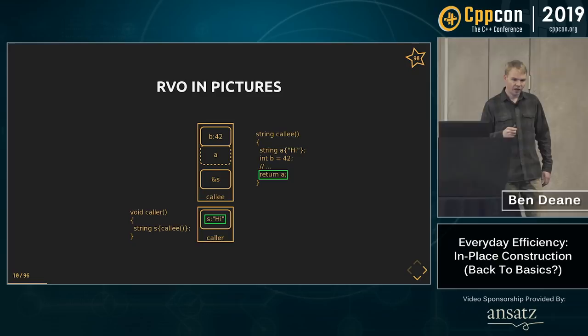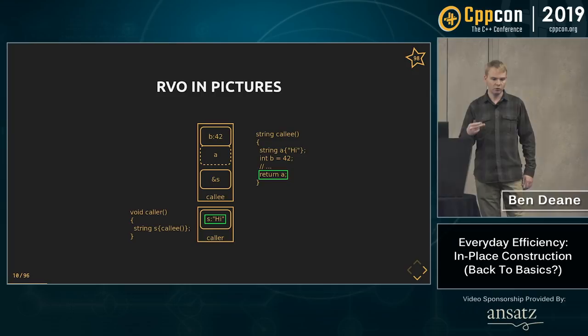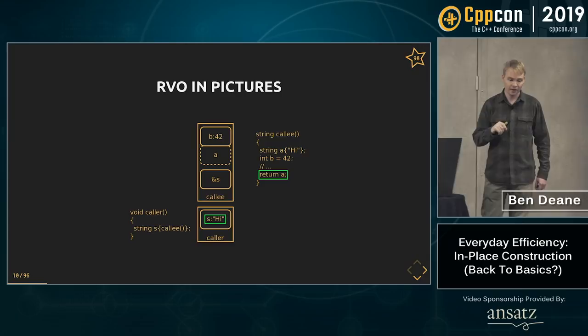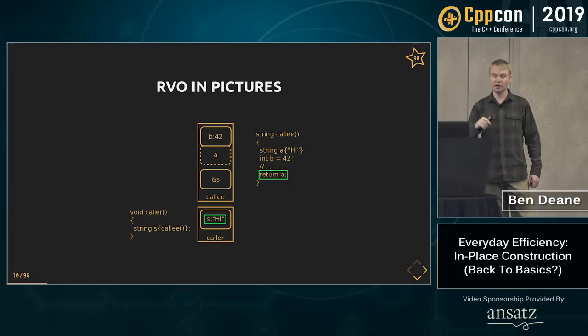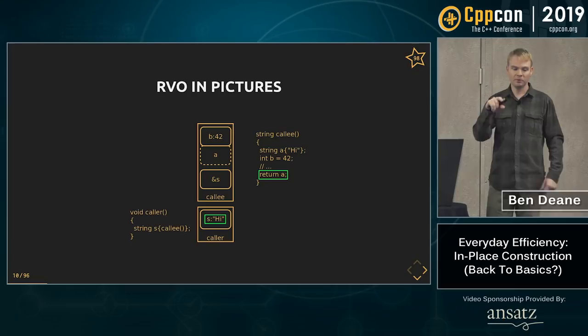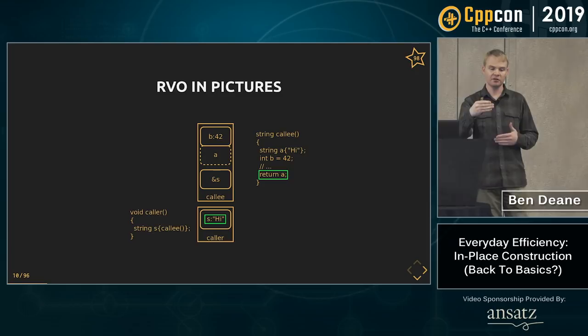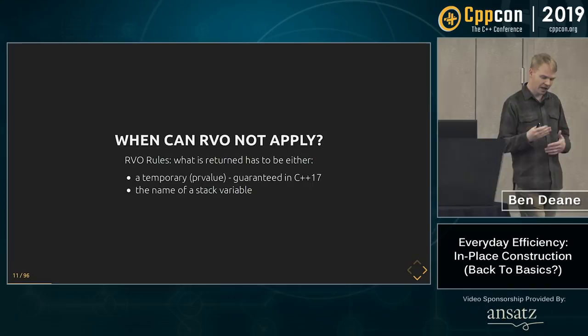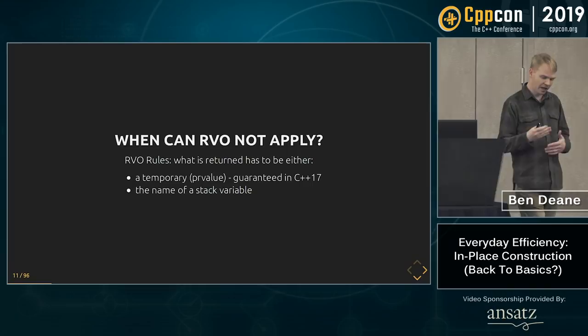Here's how RVO works — a quick recap. When a caller calls into a callee, there's an extra hidden parameter which is the address of the return value. If the callee can construct what it's going to return directly in the caller's stack frame, there is no need to construct and then copy at the point of return. Without RVO you'd construct and then at the return you'd copy or move. When you can construct it directly in the caller's stack frame, that's RVO.